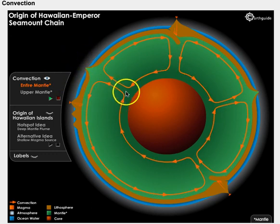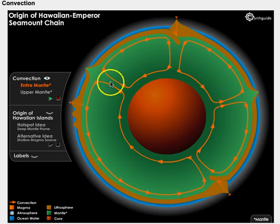If you notice, there are certain spots where the arrows represent upward movement. This is because the core heats up the magma at this region. When the magma is heated up, it becomes less dense and rises towards the crust.